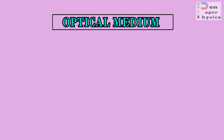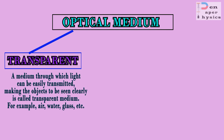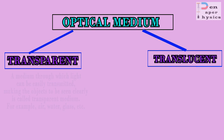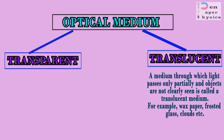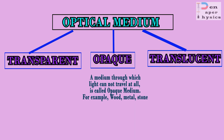We can categorize an optical medium into three types. First, transparent medium, through which light can travel easily — example: air, glass. Second, translucent medium, through which light can travel partially — example: fog, frosted glass. And last, opaque medium, through which light cannot travel at all and it produces a very dark shadow — example: wood, chair, and mirror.